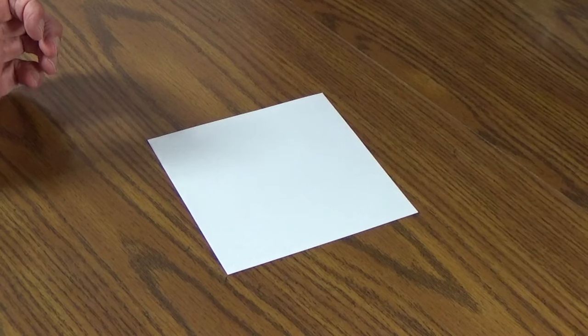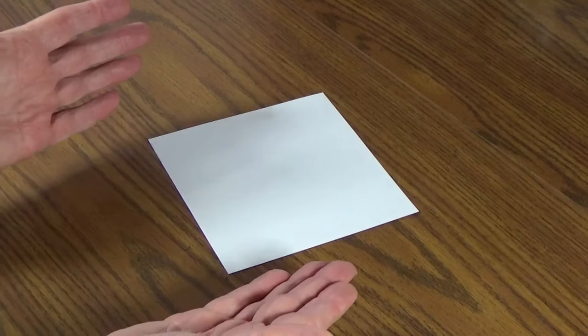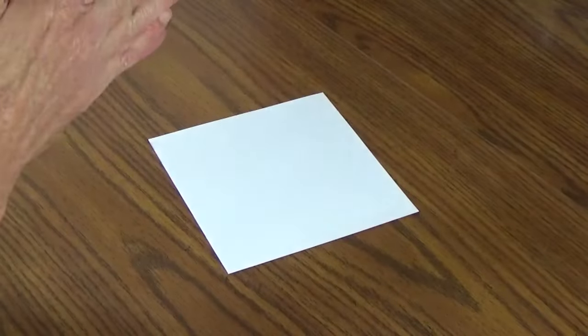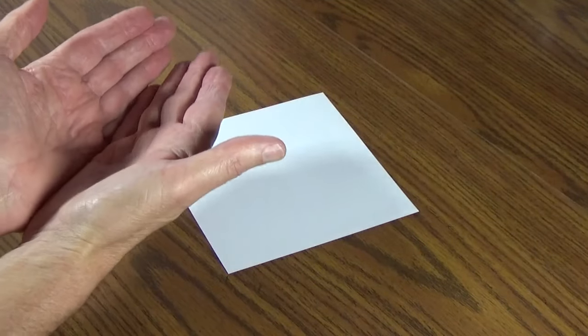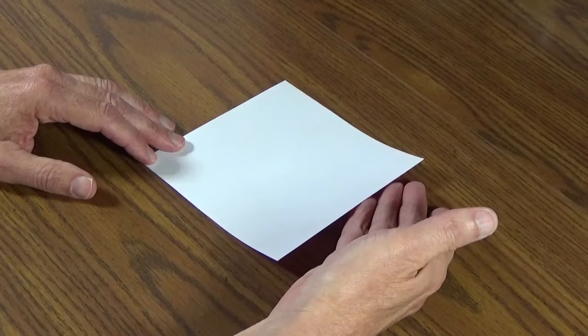The first fold we're going to make is called a valley fold. That's where you take your paper from one corner to the other and fold it together so it's got a V or a valley pointing downward, and we're going to form a triangle.